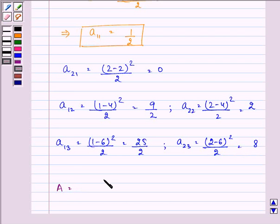So now we have A as A11 which is 1 upon 2, A12 which is found out to be 9 by 2, then we have 25 by 2. These three values we have taken out. Now these three values we will be writing 0, 2, 8.